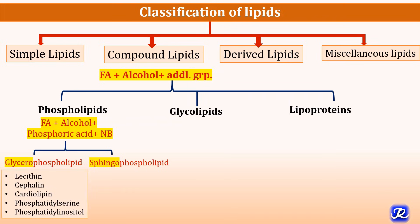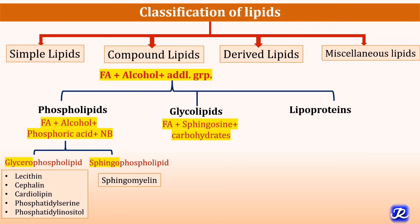Examples of glycerophospholipids include lecithin, cephalin, cardiolipin, phosphatidylserine, phosphatidylinositol, and plasmalogen — all of which contain glycerol as the alcohol. Sphingomyelin, which contains sphingosine, is the example of sphingophospholipid. Glycolipids consist of fatty acid plus sphingosine as the alcohol, plus carbohydrates — hence the name glycolipids. Examples of glycolipids are cerebrosides and gangliosides.